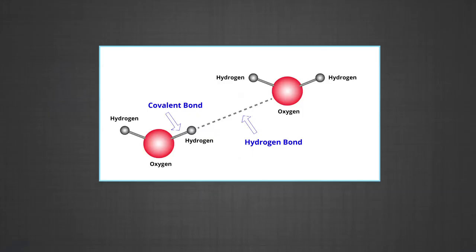Water: hydrogen bonding exists in water molecules also. In addition to two covalent O—H bonds, the oxygen atom forms two hydrogen bonds. As a result of hydrogen bonds, each oxygen is tetrahedrally surrounded by four hydrogen atoms — two by covalent bonds and two by hydrogen bonds. In the figure, you can clearly see the covalent bonds and the hydrogen bonds.